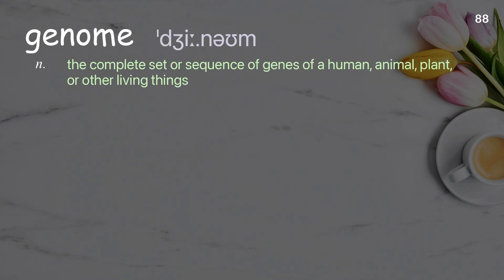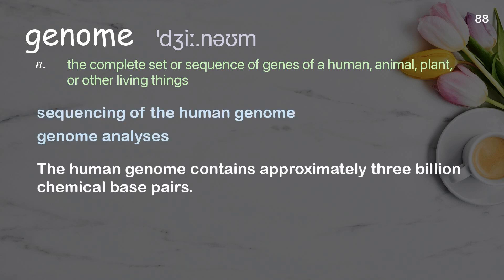Genome: the complete set or sequence of genes of a human, animal, plant, or other living things. Examples: sequencing of the human genome, genome analyses. The human genome contains approximately 3 billion chemical base pairs.